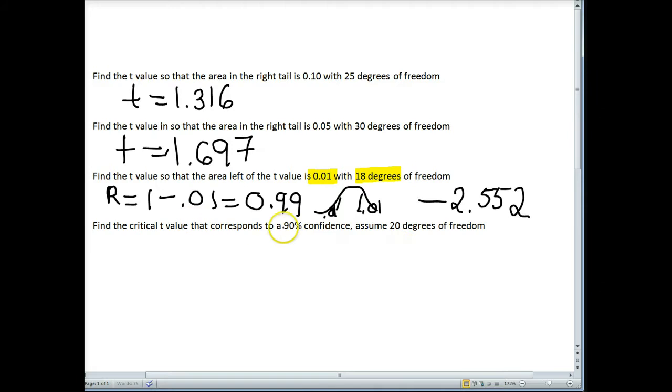Find the critical t-value that corresponds with 90% confidence, assuming 20 degrees of freedom. So now we're reading the table slightly backwards. In order to find our probability value, the degrees of freedom is easy, it's given to us. We actually have to take 100 and subtract 90. We're 90% certain, which means we're 10% uncertain.